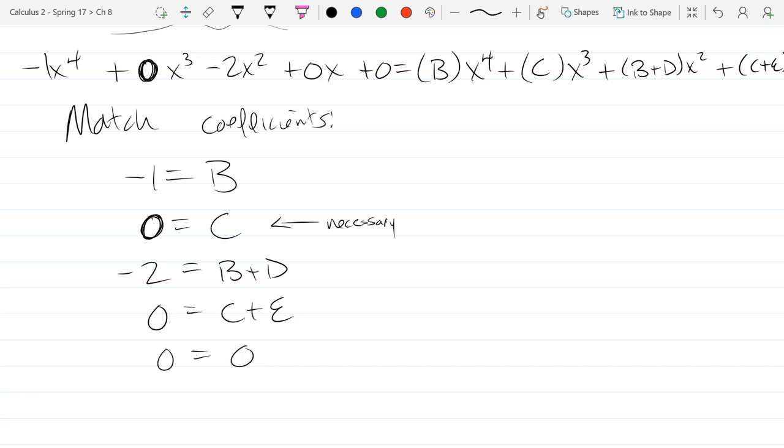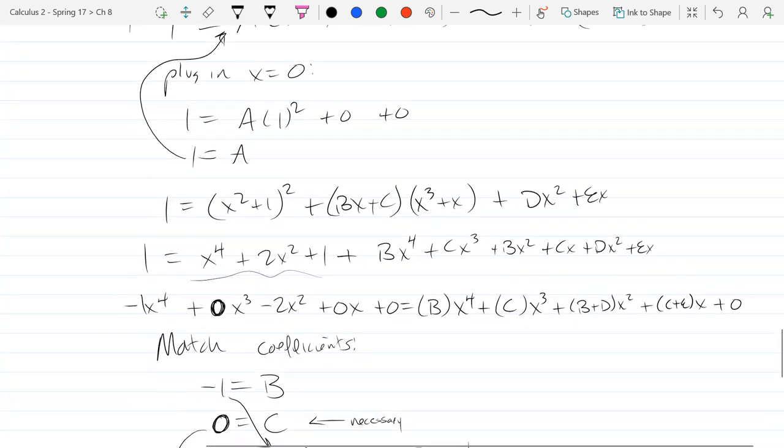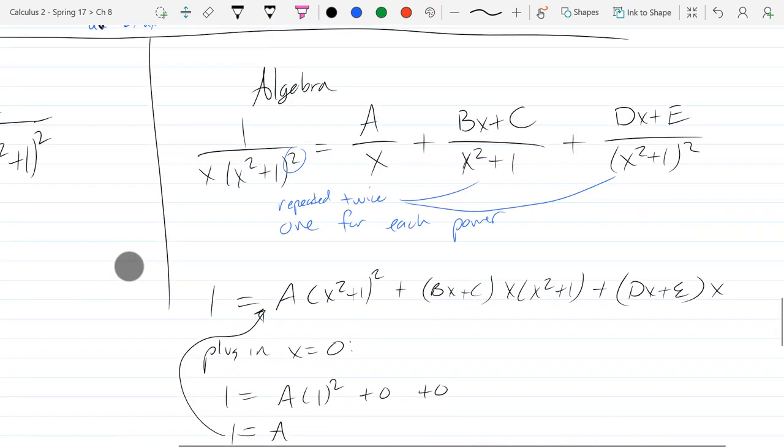This is a trivial linear system because I already know b equals negative 1 and c equals 0. That's going to give me d and e without using any real serious linear algebra. So d equals negative 1 and e equals 0. We're going to go ahead and rewrite this.